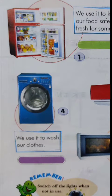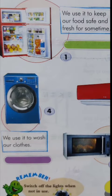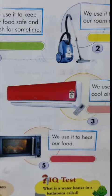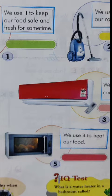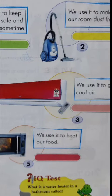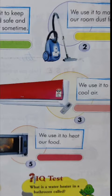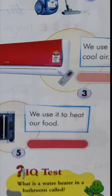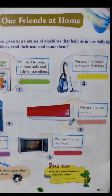Number four is the washing machine. It helps us to wash our clothes, cleans our clothes, and saves our time. Number five is the picture of a microwave oven. We use the microwave oven to heat or cook food. There is also an IQ test question here: what is a water heater in a bathroom called? That is a geyser.